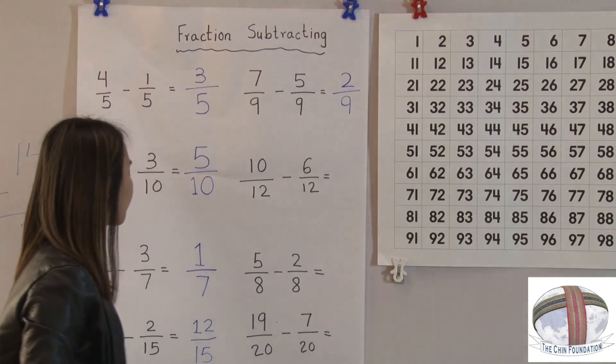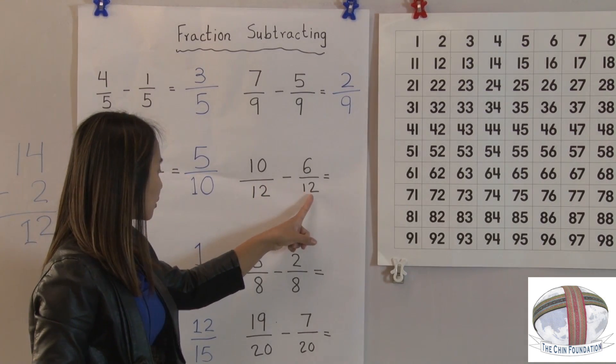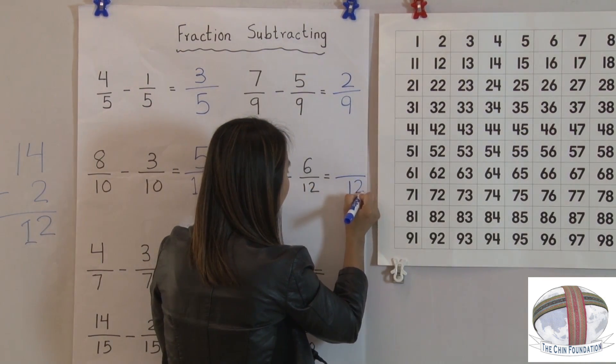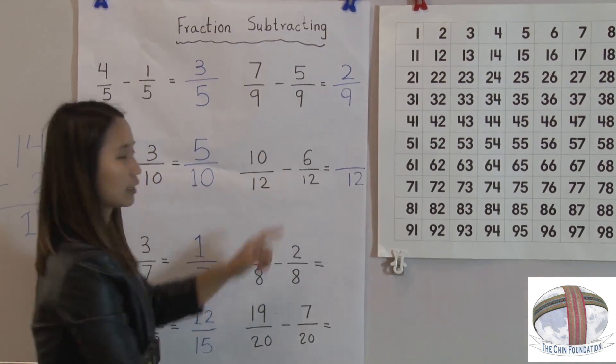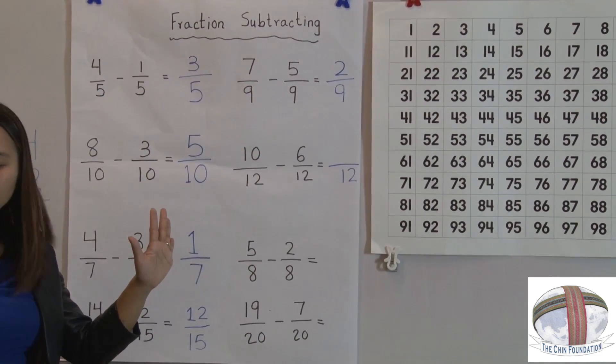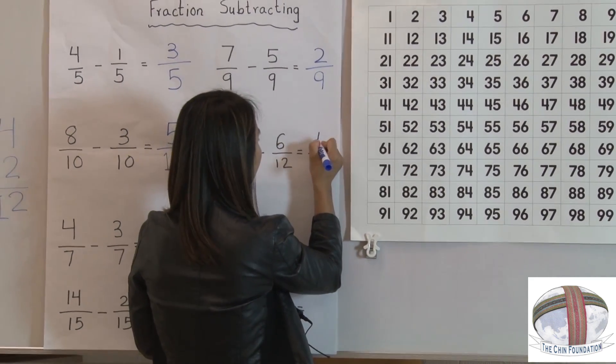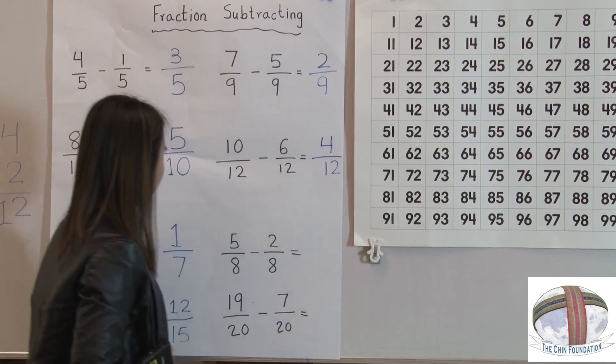Now still the same. The denominator is the same. So we'll just write 12. 10 take away 6. 1, 2, 3, 4, 5, 6, which is 4. We'll write 4.